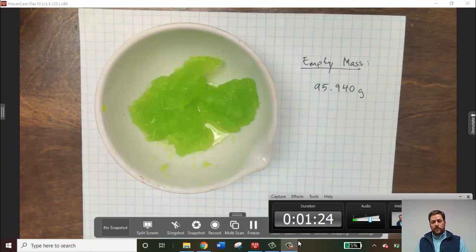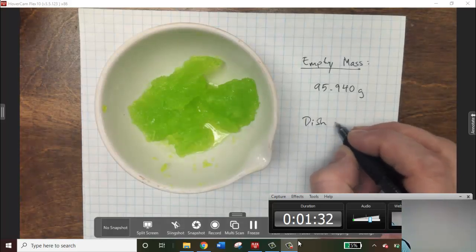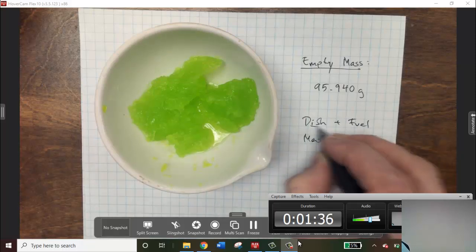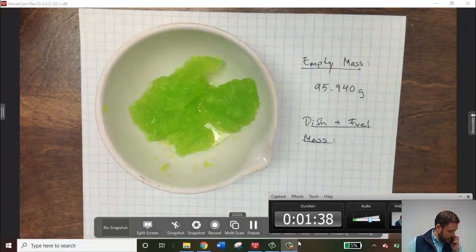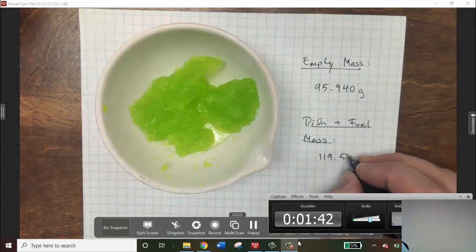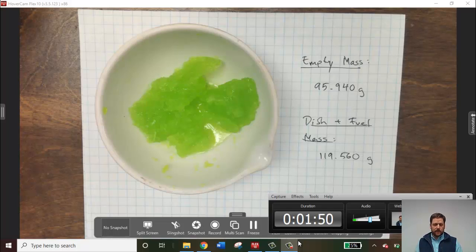The next thing we want to do before we actually light the stuff on fire is to record the mass of the dish and the fuel together. The dish and the fuel mass together was 119.56. Now, those numbers I'll show you what they look like in the data table in a minute. They go in the column for methanol.